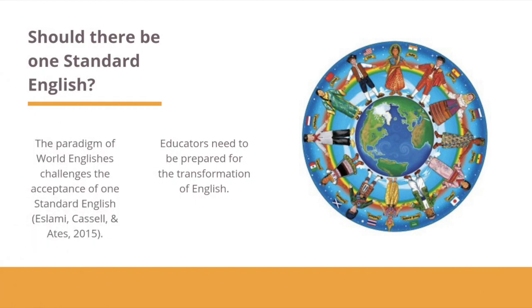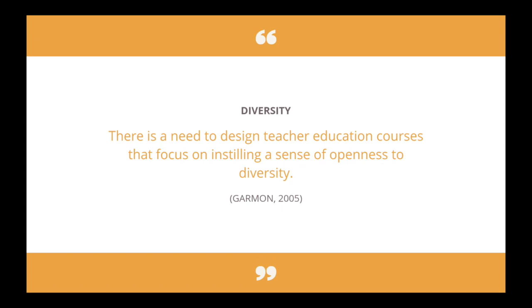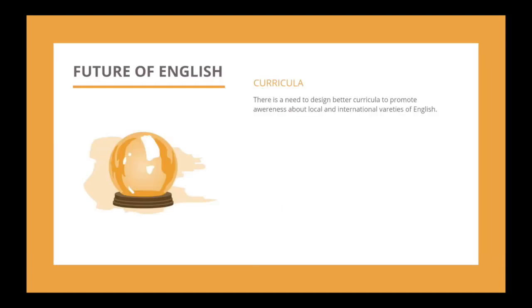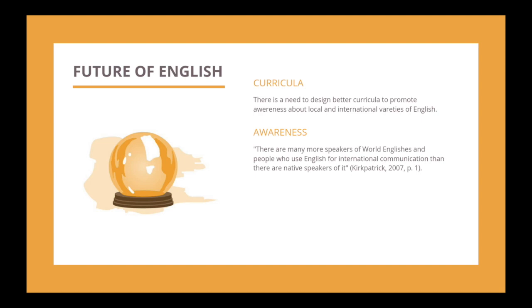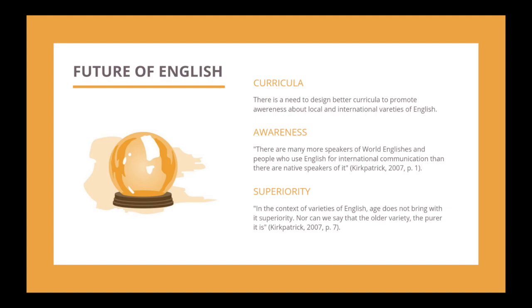All of this raises the question of whether there should be one standard English. If we look at the paradigm of World Englishes, we can see that one standard English cannot and should not be accepted. It is close to impossible to create it because everything related to English changes all the time. That is why educators should be prepared for this transformation. There should be new courses for teachers to prepare them for change and acceptance of diversity, and new curricula that raise and promote awareness of the varieties of English. Native teachers should understand that they are no longer in the majority of English speakers, and that non-native speakers are fully equipped to speak or teach the language. The existence of varieties of English doesn't mean that one variety is more correct than another, as even the age of a variety does not determine its superiority.